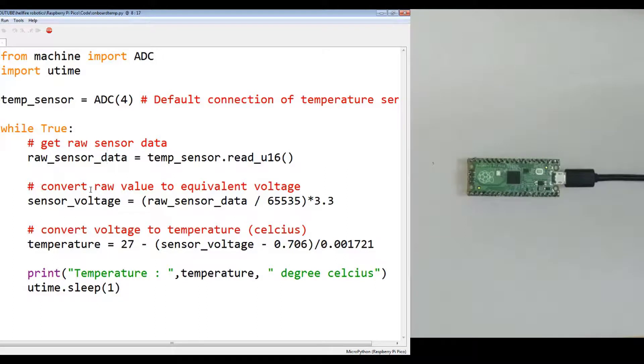Now second step is to convert the raw value to equivalent voltage. Note this mathematical equation: take the raw sensor data and divide it by the maximum range, that is 65,535 for 16-bit ADC, and then multiply it with the maximum possible voltage of the system, that is 3.3 volts.